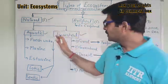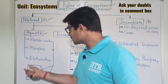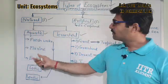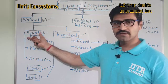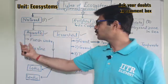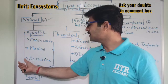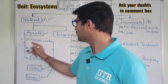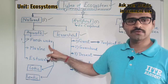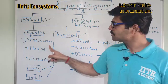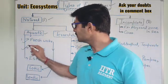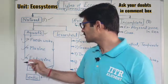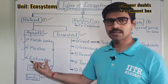Now let us look at aquatic ecosystems. We can further classify aquatic ecosystems into three different categories: first is freshwater aquatic ecosystems, second is marine ecosystems, and third is estuarine ecosystems.